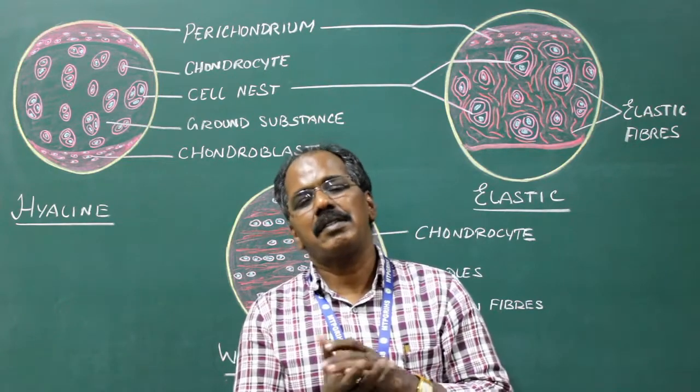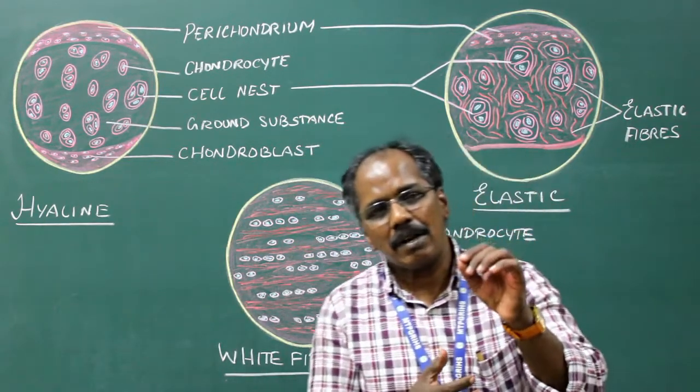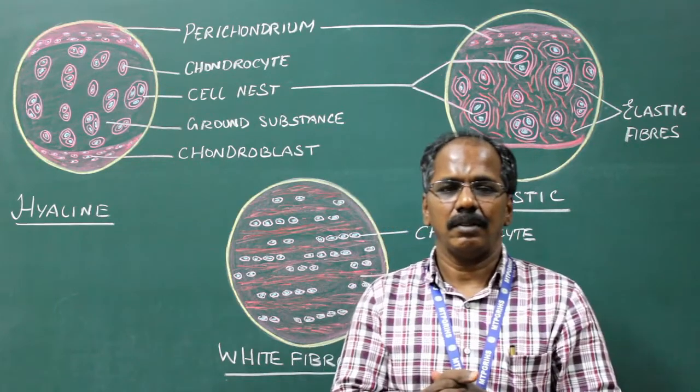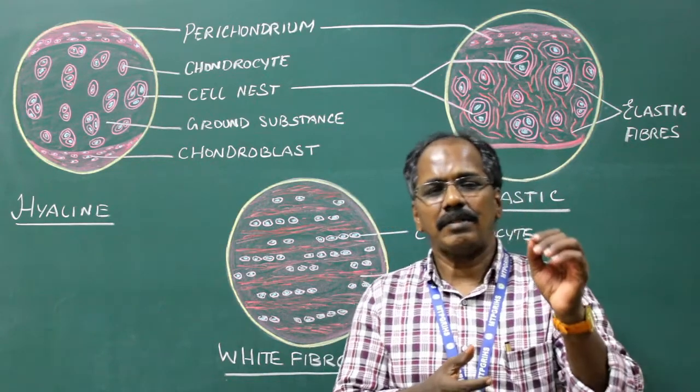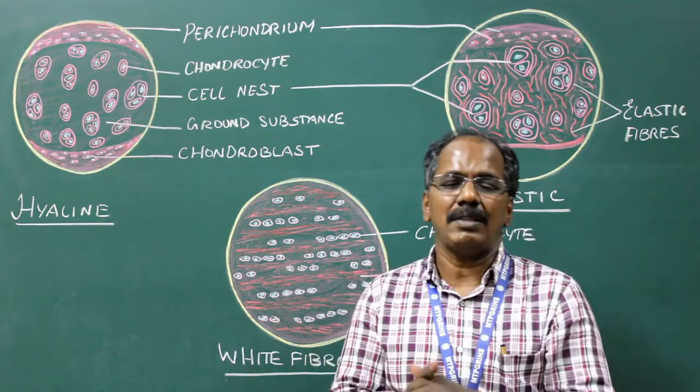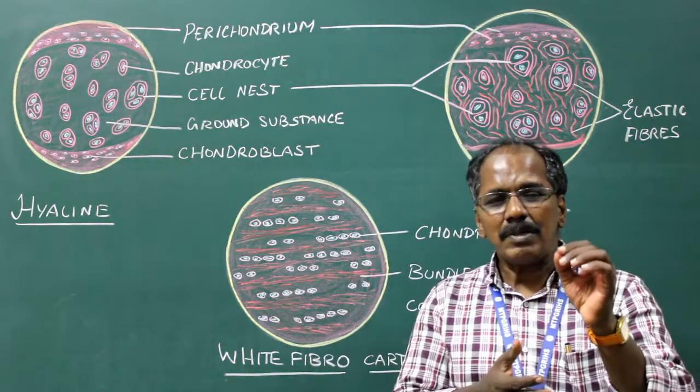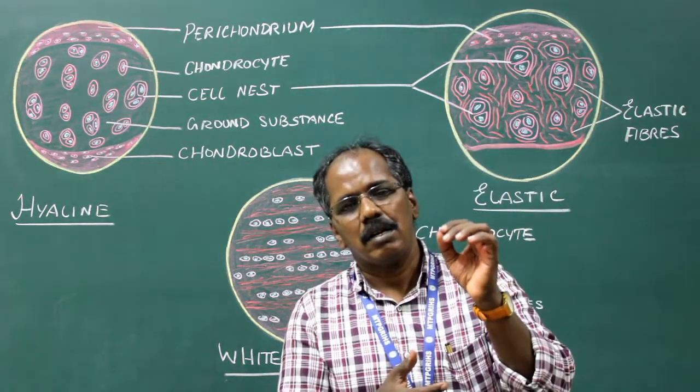General features. Cartilage is derived from mesoderm. The cells of the cartilage are known as chondrocytes. Immature cartilage cells are known as chondroblasts.